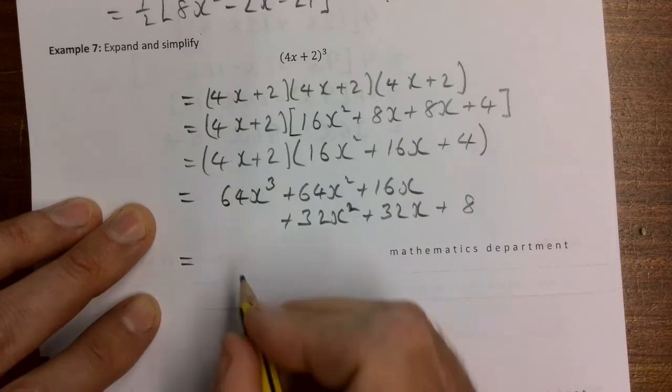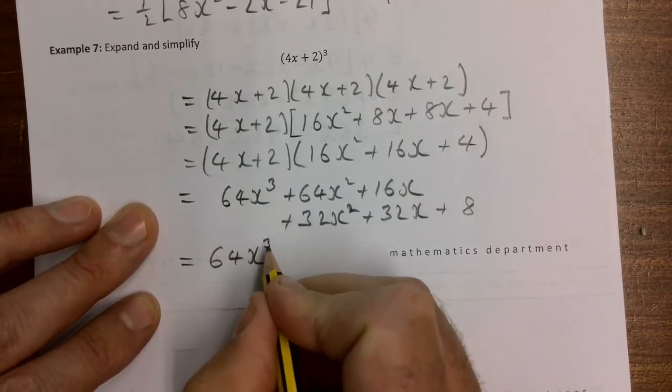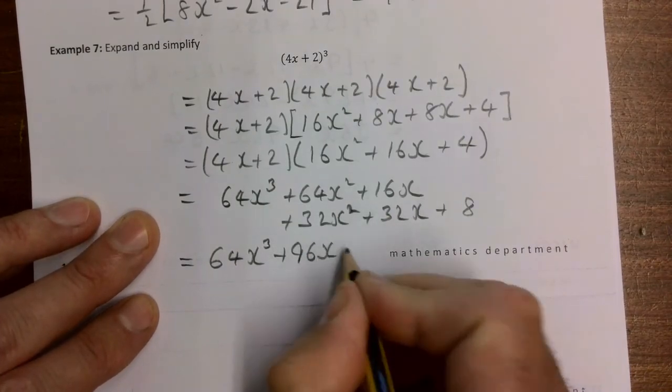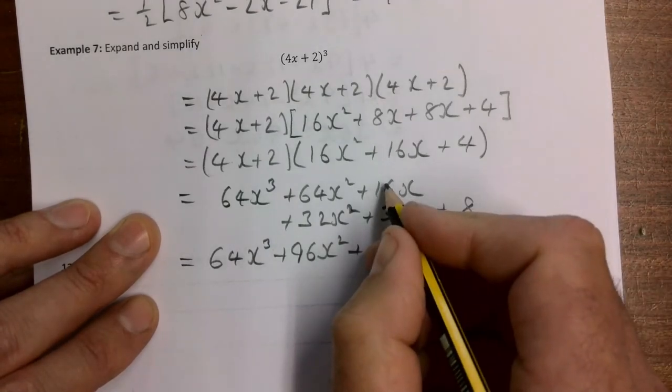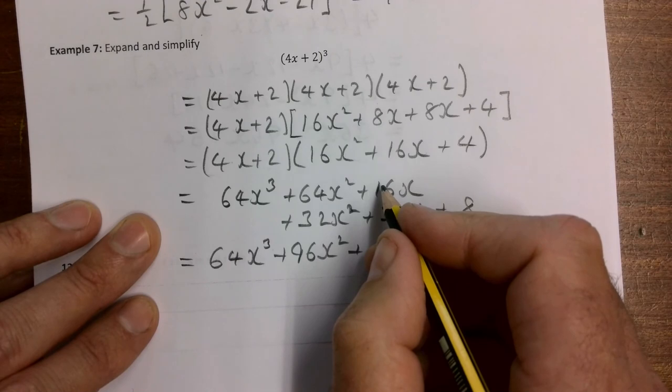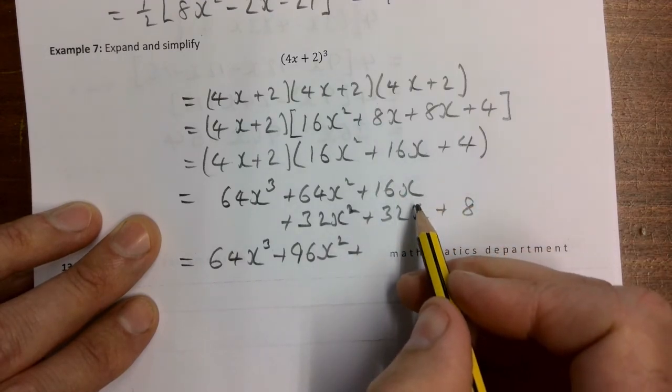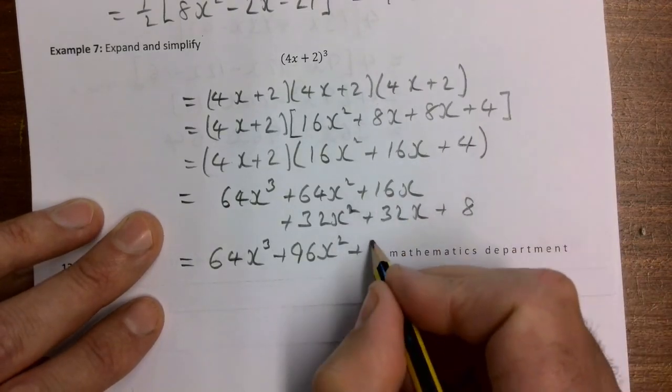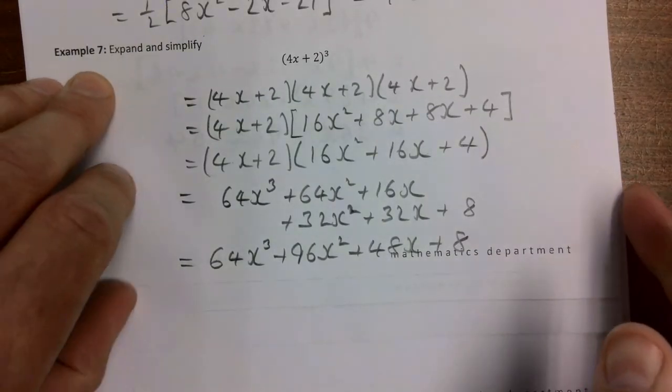That means when we're tidying up, the like terms are above each other so we can give our final answer. So we have 64x cubed, 64 plus 32 gives us 96x squared. 16 - have I messed up there? I think I'm okay. What am I trying to do? Yeah, I think I'm okay. Is 48x plus 8. So it's done.